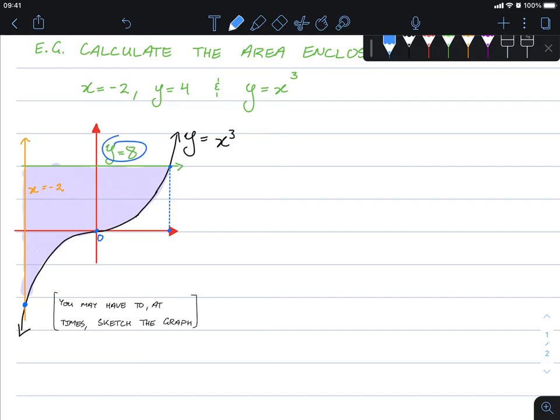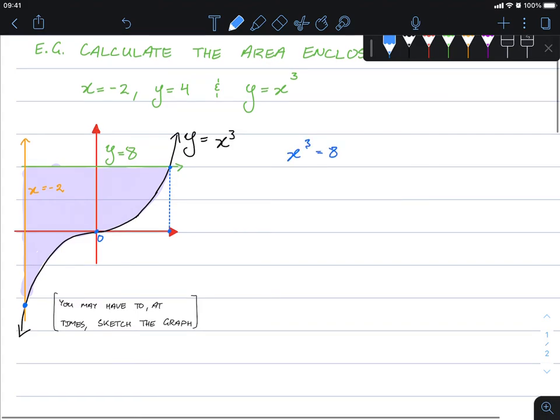We can let y equals 8 and y equals x cubed equal each other, so we get x cubed equals 8. Taking the cube root of both sides, and I hope you can see that that's actually just going to be 2.